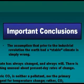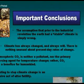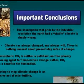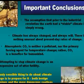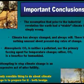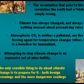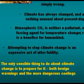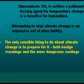Important conclusions: The assumption that prior to the Industrial Revolution the Earth had a stable climate is simply wrong — climate has always changed and always will. There is absolutely nothing unusual about present-day rates or magnitude of climate change. Atmospheric carbon dioxide is neither a pollutant nor a primary forcing agent for temperature change; rather, carbon dioxide is a benefit for humankind. Attempting to stop climate change is an expensive act of utter futility. The only sensible thing to do is to prepare for climate change in both directions — both for the beneficial warmings and for the much more dangerous coolings — for both are certain to occur in the future.